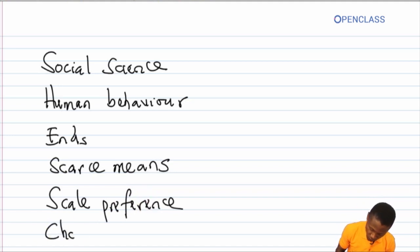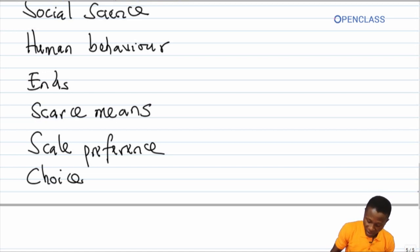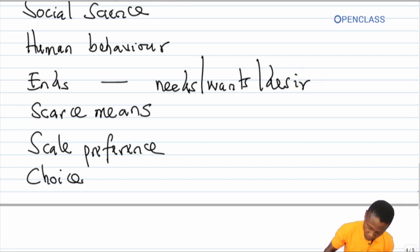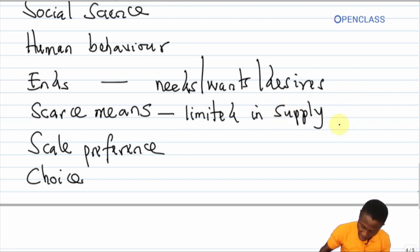Then choice. Another word for ends is needs or wants or desires. Examples could include shoes, bags, food, and clothing. Scarce means simply means that the resources required to meet these needs are limited in supply.